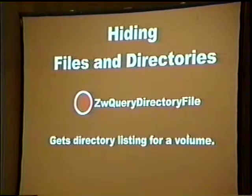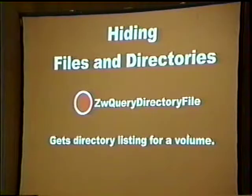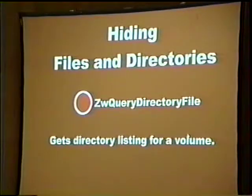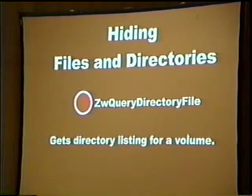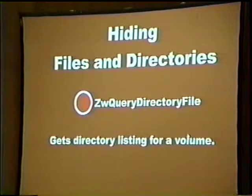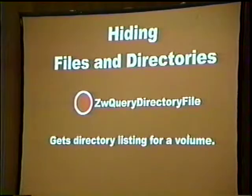I'm going to go over ZwQueryDirectoryFile. This is a system call — a native API call — that's exported out of the kernel. Its purpose is to return a directory listing for a volume. There's a complete list of native API at sysinternals. There's an excellent book called 'Native API Reference' by Gary Nebbitt — it's the best book on this subject. It goes through every single native API call, all the parameters, with an incredible amount of reverse engineering of the code, process structures, and all kinds of structures.